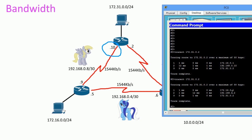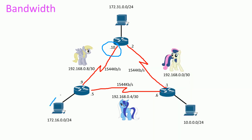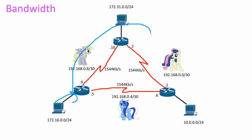The traceroute result looks really weird. Our first hop is the gateway, then we hit this strange interface at 192.168.something, and then finally the destination. That doesn't make any sense.